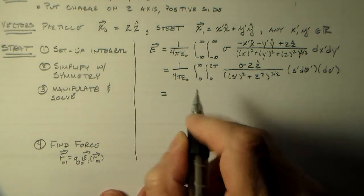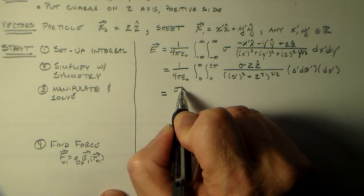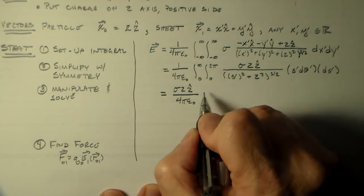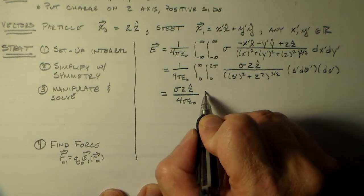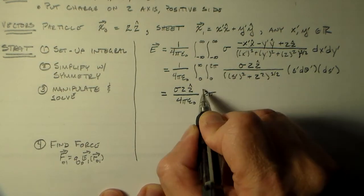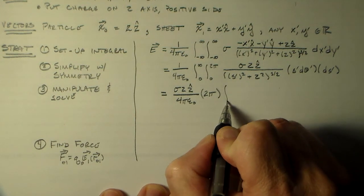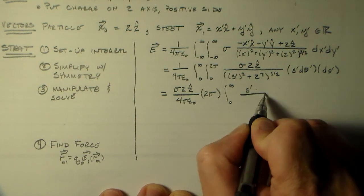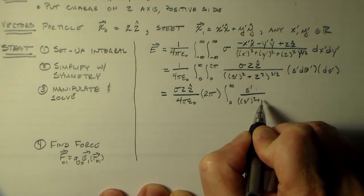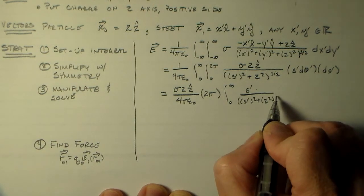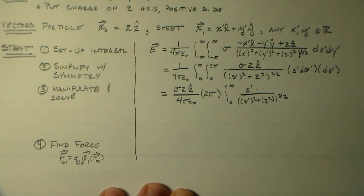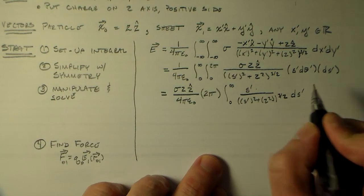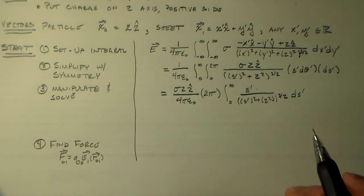Okay, so now we need to manipulate things and solve it. So we can pull this sigma Z Z hat out here, and the four pi epsilon naught, and we can do the integral from zero to two pi, because we don't have any thetas in here. And then we can just integrate from zero to infinity of S prime over S prime squared plus Z squared to the three halves. And we're actually in luck because this is a perfect integral.